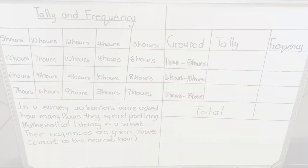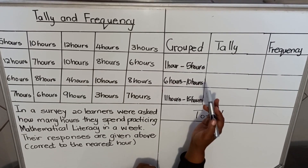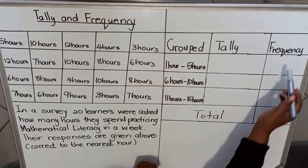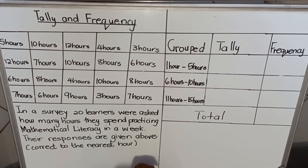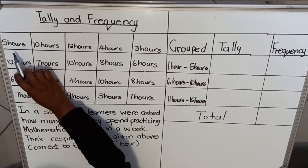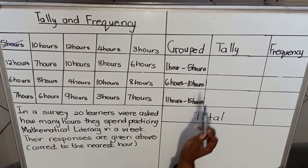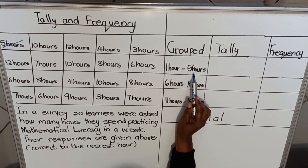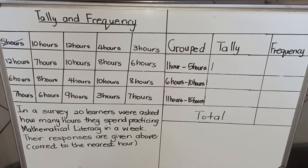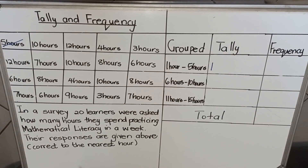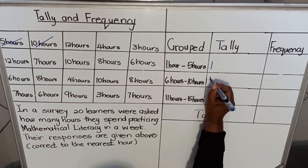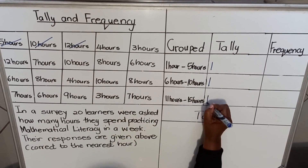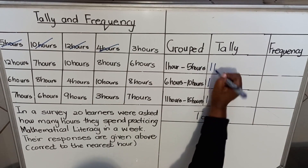Here we have a table with grouped data. We'll write tallies in the next column. The first person spent five hours, so you cancel the five hours out from the raw data. The group 'one to five hours' gets one tally mark. Ten hours falls in the 'six to ten' category. Then we have four hours, three hours, and twelve hours.